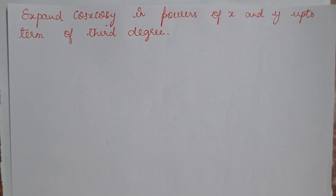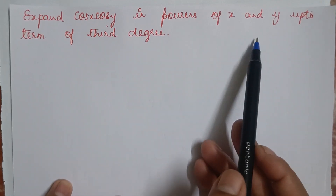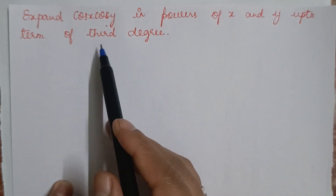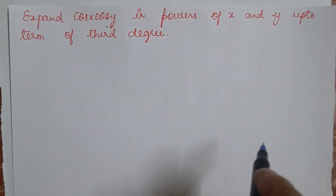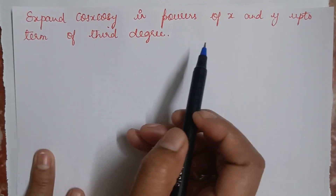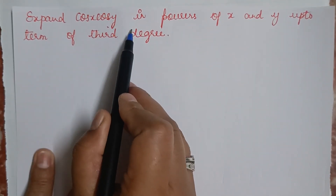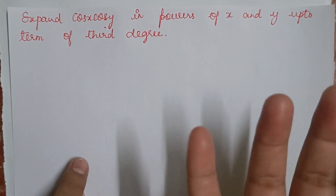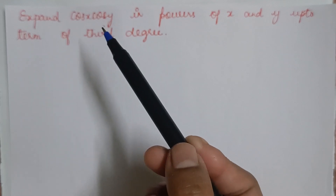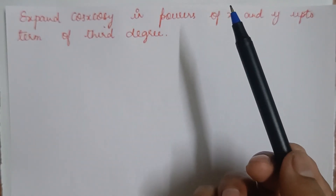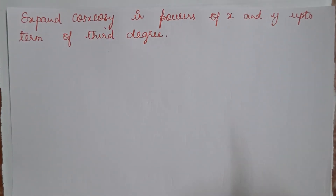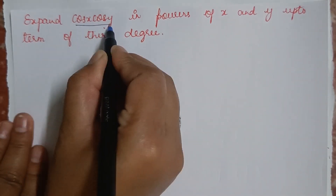Hello everyone, welcome back to my YouTube channel Learn with Sumi. In this video we're going to expand cos x · cos y in powers of x and y up to terms of third degree. In our previous video I already solved this question using another method — the link is mentioned in the description. Here I'm going to do it in a different method using Taylor's series expansion.